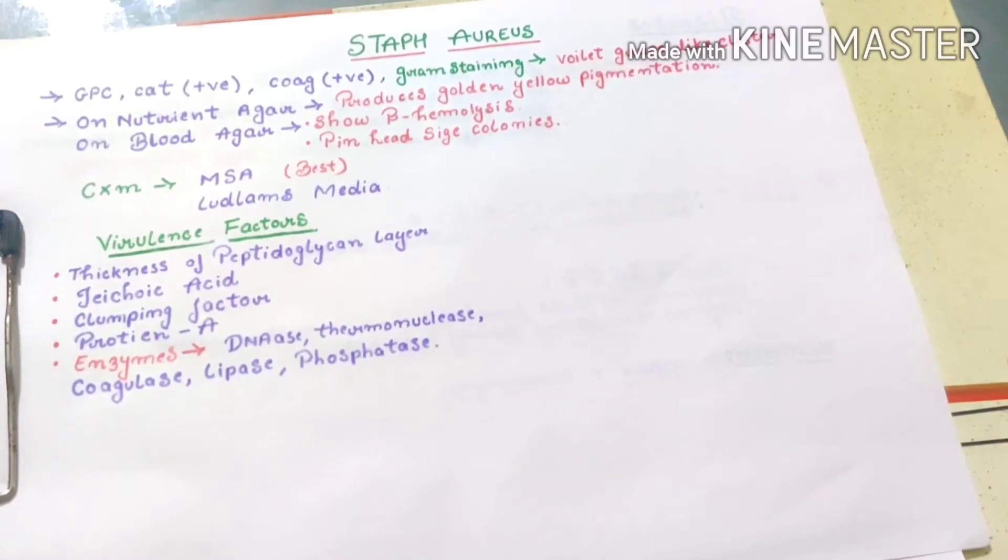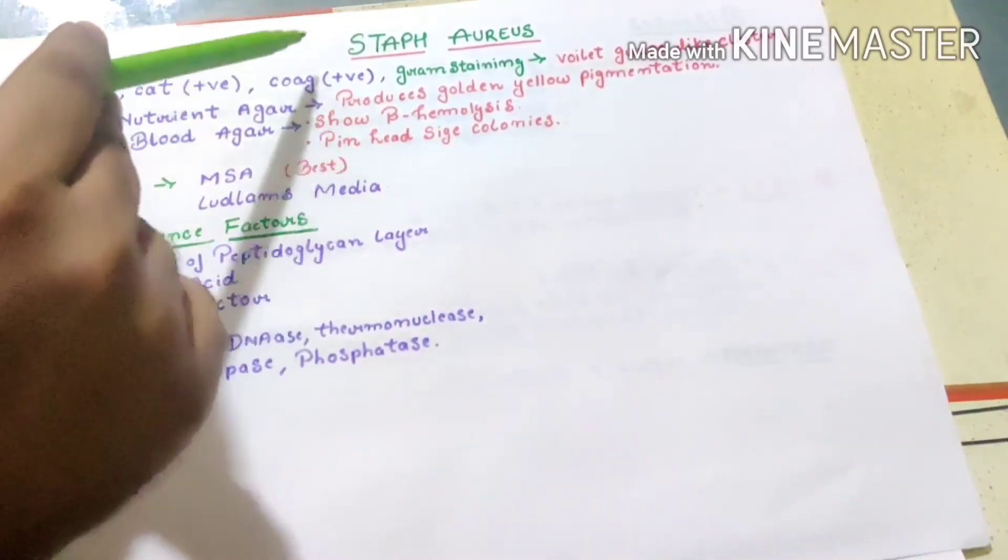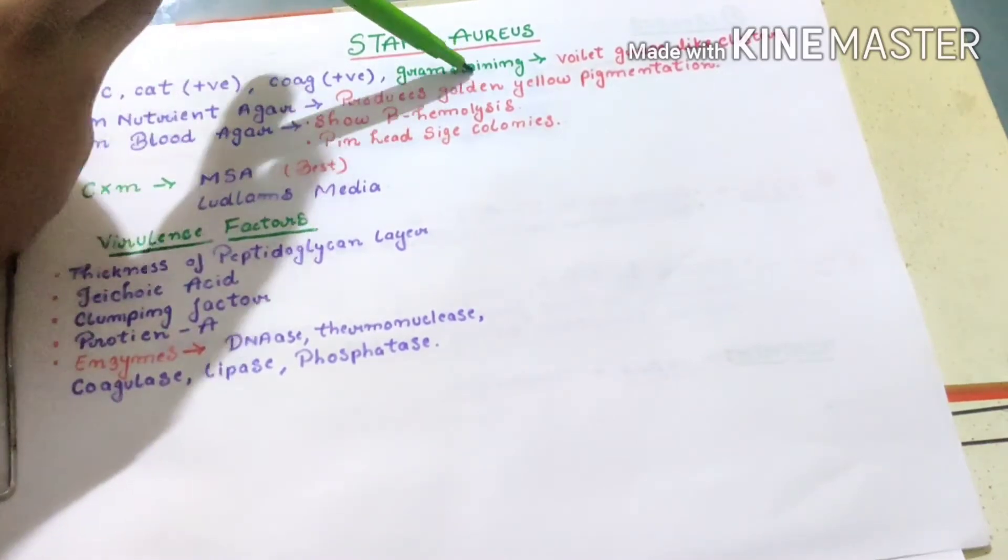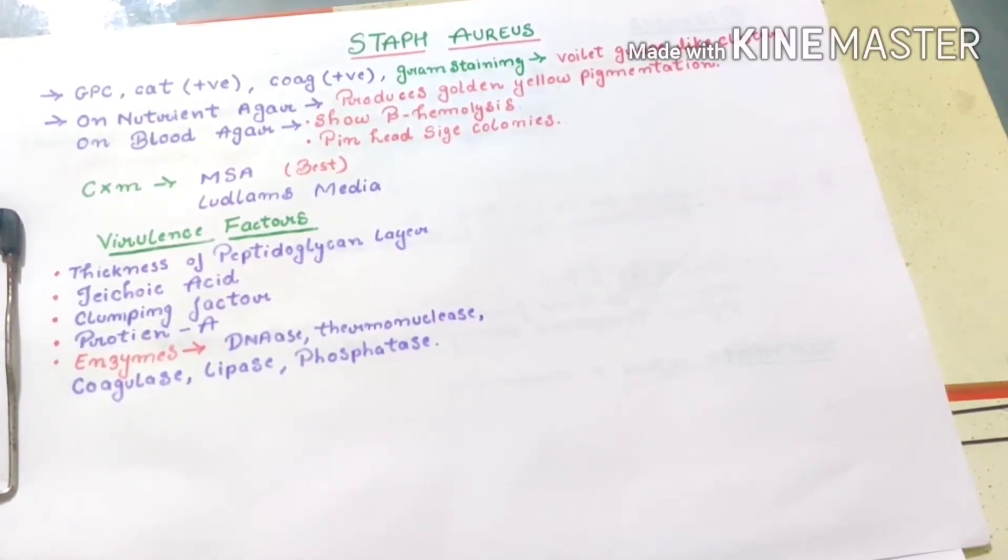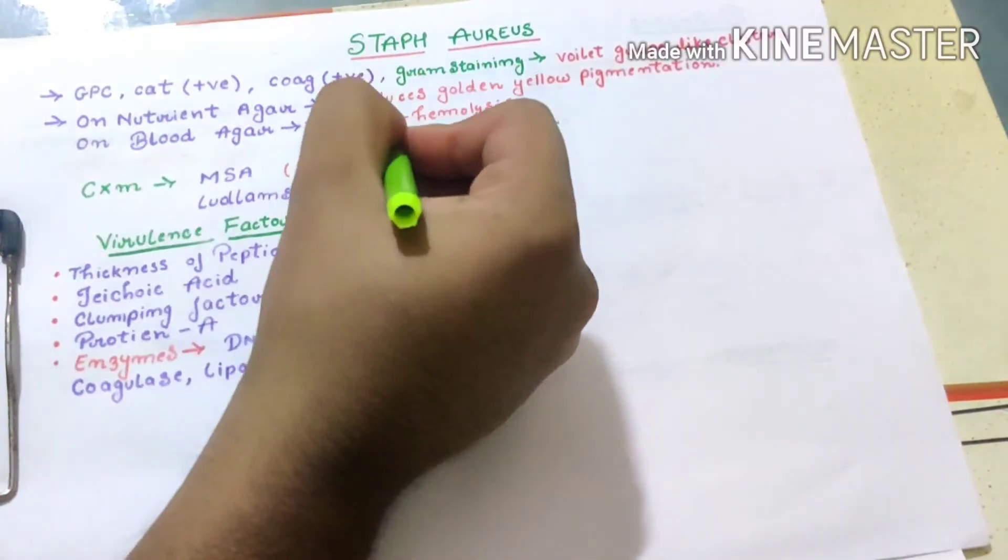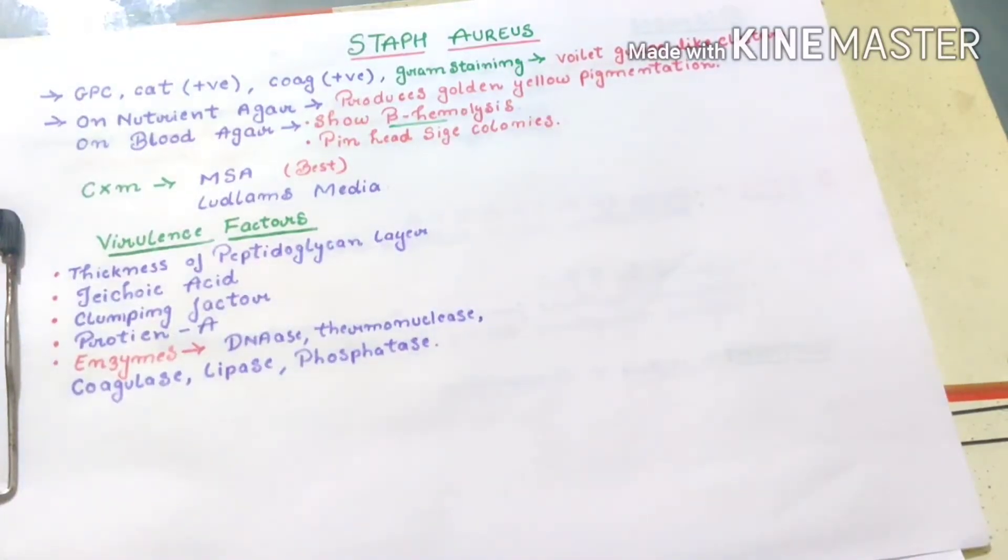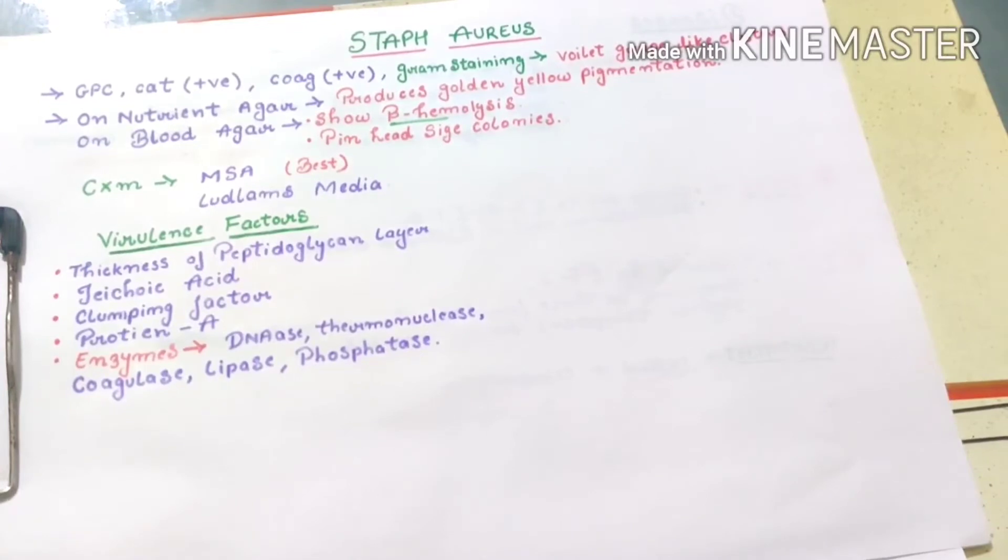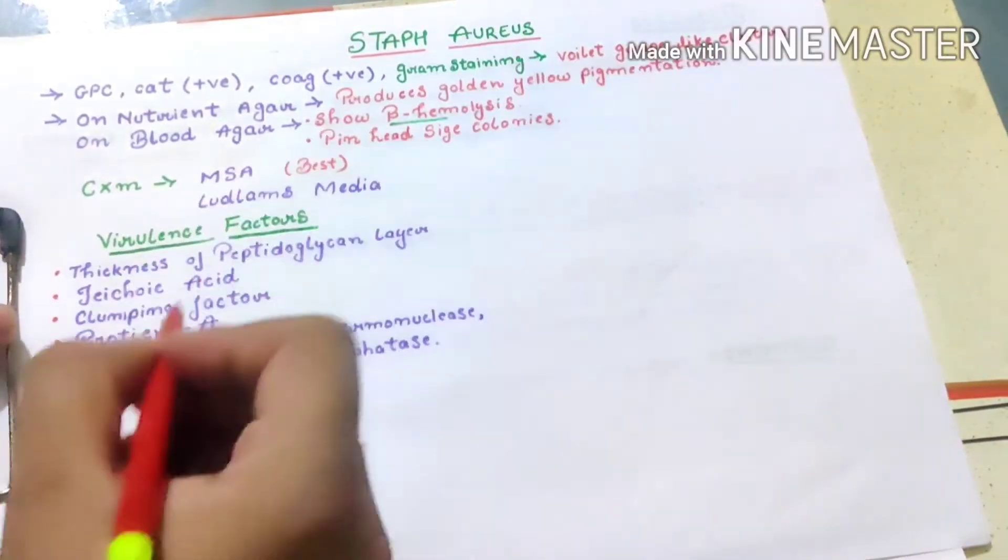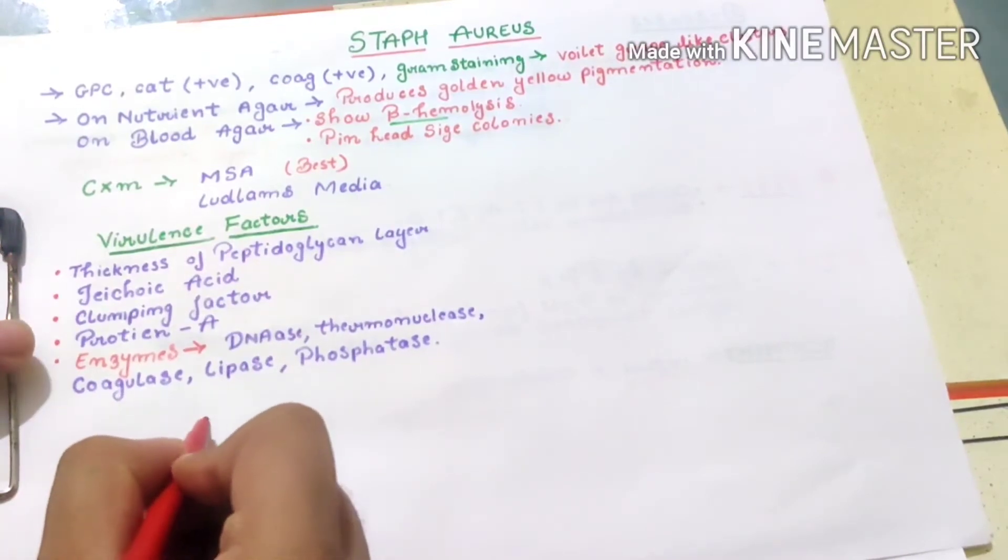On nutrient agar it produces golden yellow pigmentation, and on blood agar it shows complete beta hemolysis. Now the question arises: what is beta hemolysis? Beta hemolysis means complete hemolysis.